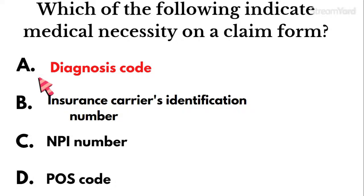A place of service code tells the insurance company whether the visit took place in the office, in the hospital, or somewhere else — it has nothing to do with medical necessity.